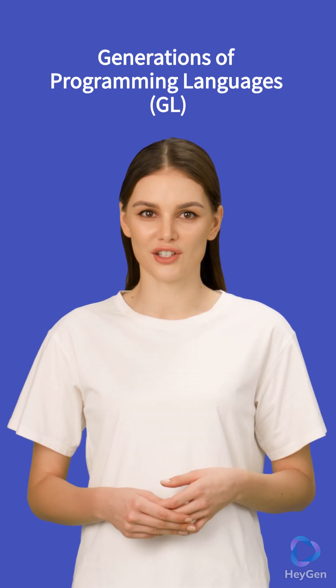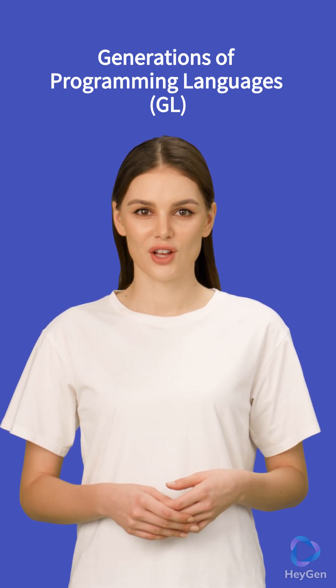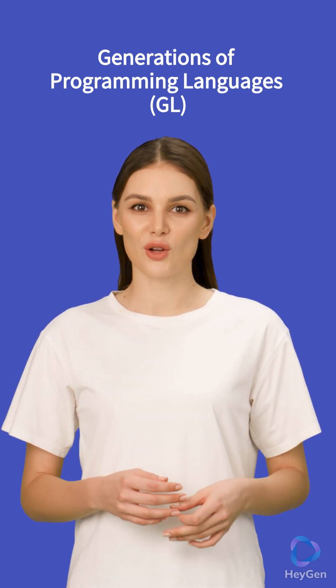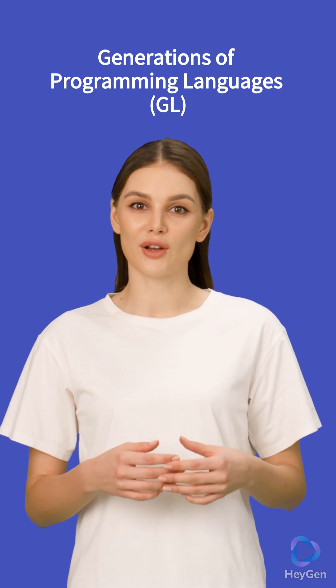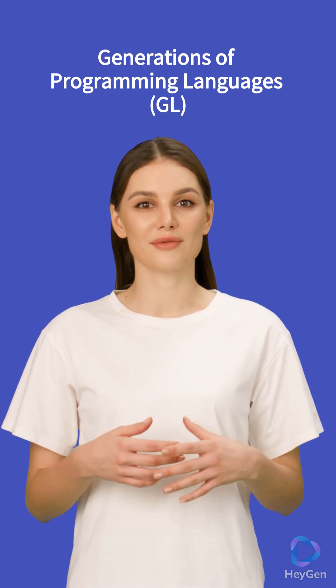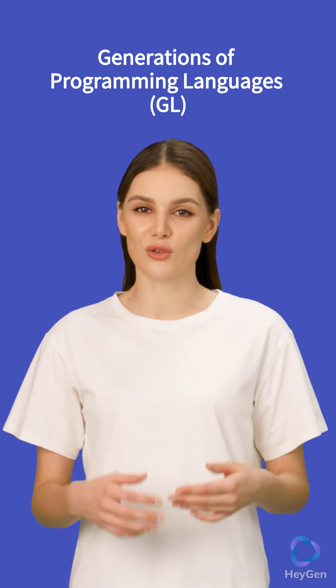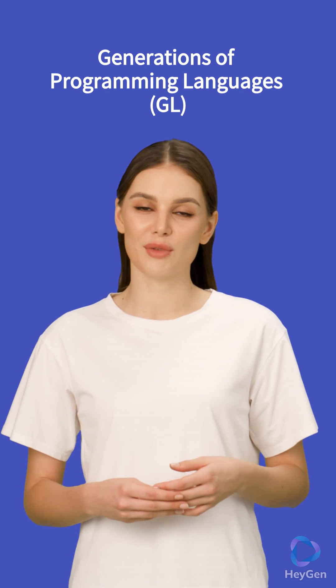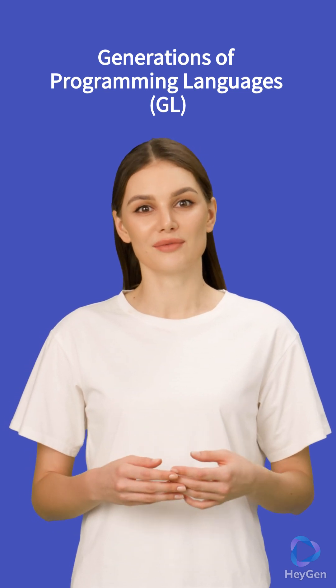There are five generations of programming languages. First-generation languages, also called machine-level programming languages, consist only of zeros and ones. Since at that time no compilers or interpreters were developed, it was restricted to binary language.